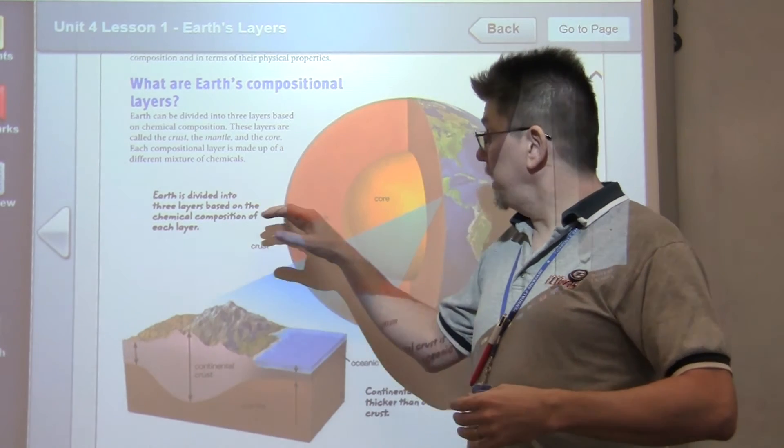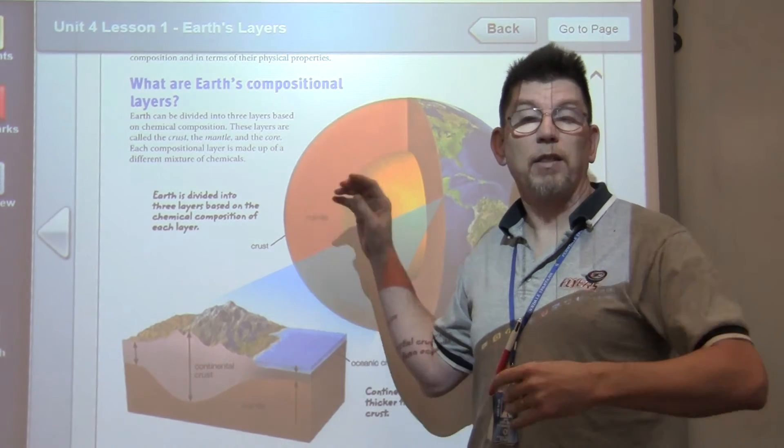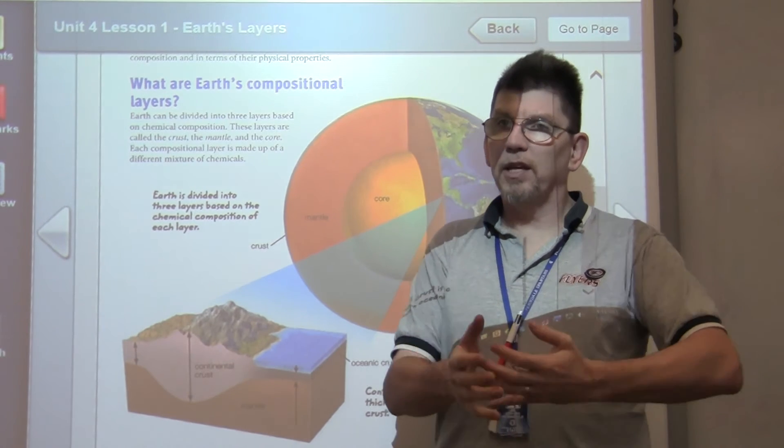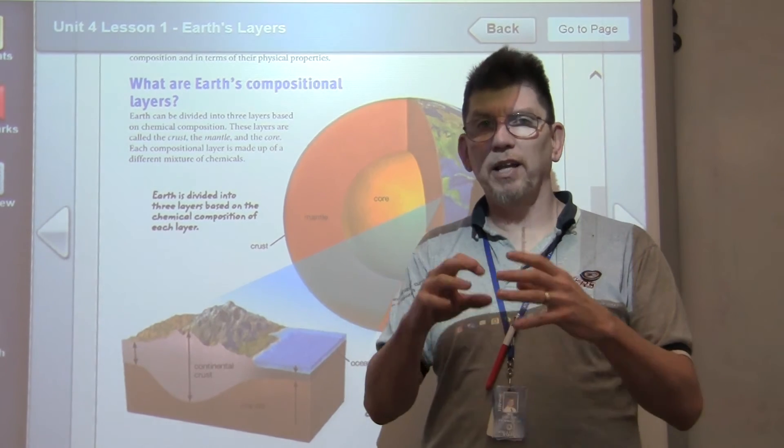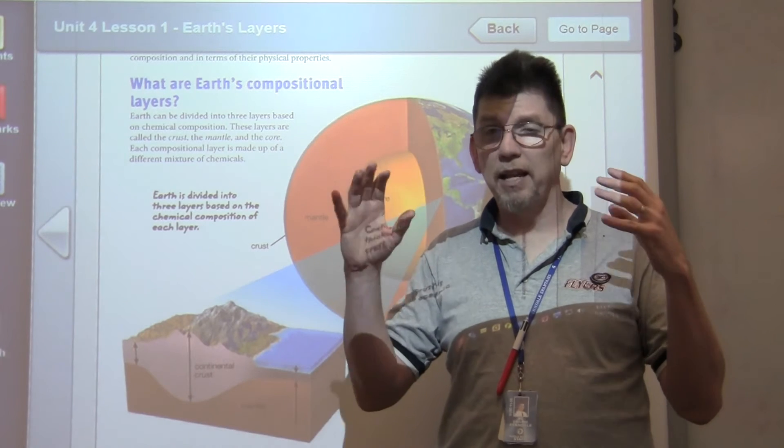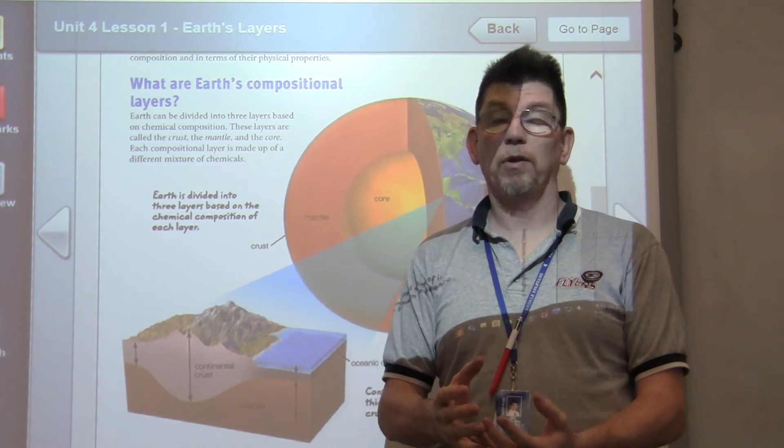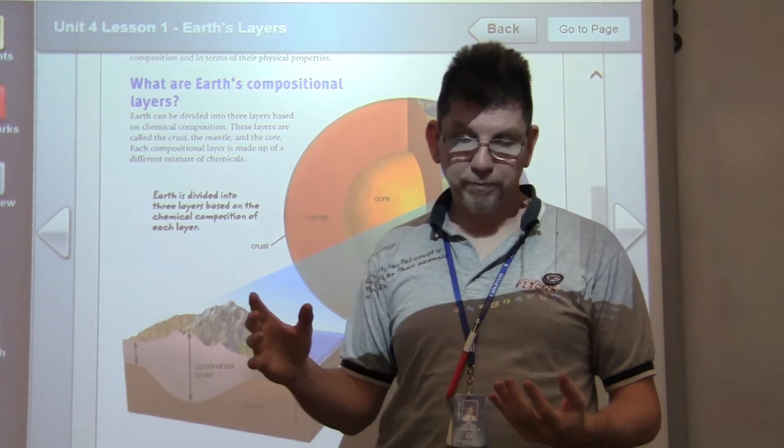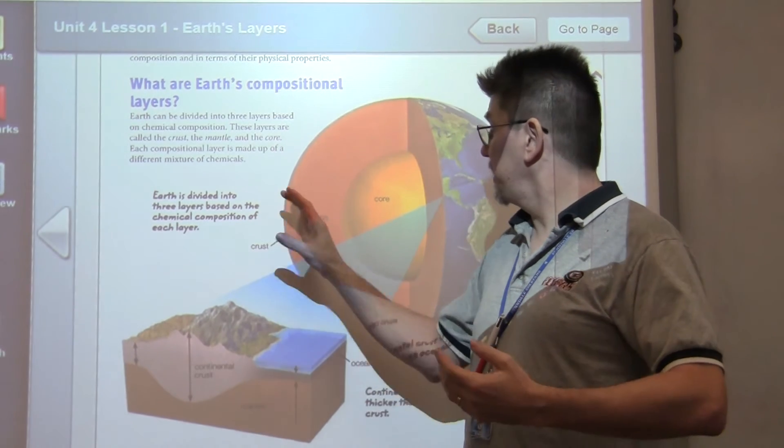As we go down deeper into the earth, the mantle, you still have silicate rocks there, but the concentrations of iron and magnesium, nickel and things like that become much greater. This is much more dense rock than the crustal rocks. It is the thickest layer.